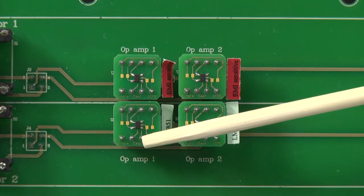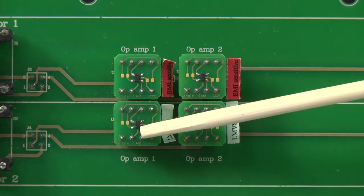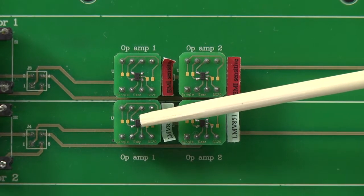The second channel, the bottom channel, is an LMV 851 with the internal EMI filters.